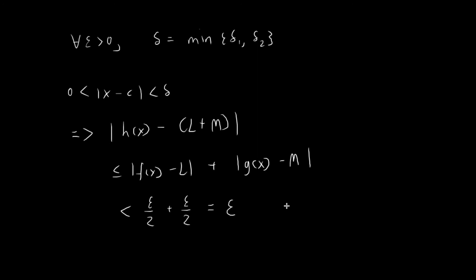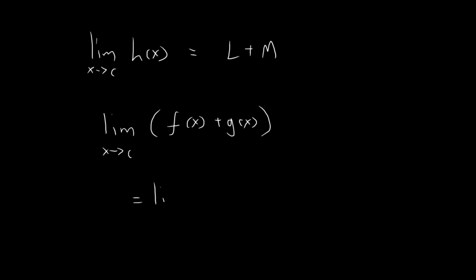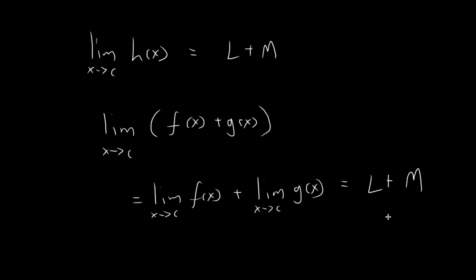This essentially completes our proof. We've shown that for whatever value of epsilon, there exists a delta such that if |x minus c| is smaller than delta, then |h of x minus (l plus m)| is smaller than epsilon. Therefore the limit as x tends towards c of h of x equals l plus m. We can write this as: the limit of f of x plus g of x equals the limit of f of x plus the limit of g of x, which equals l plus m.